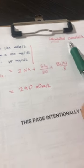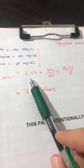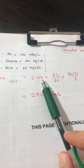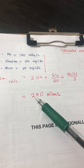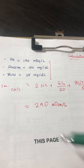And when we calculated the calculated osmolarity, we got this: 2 times sodium plus glucose over 20 plus BUN over 3 equals 290 milliosmoles per liter.